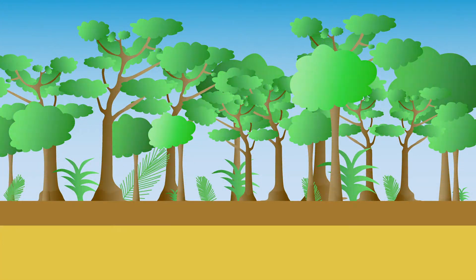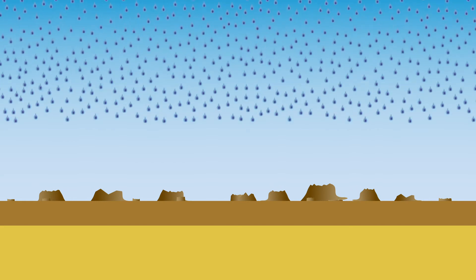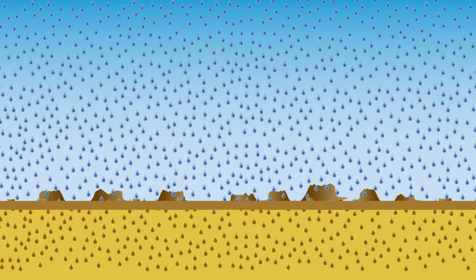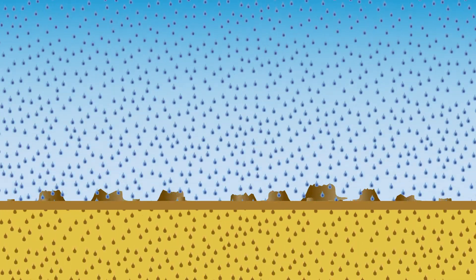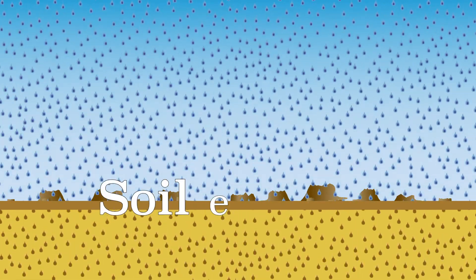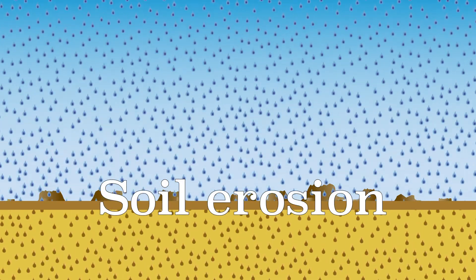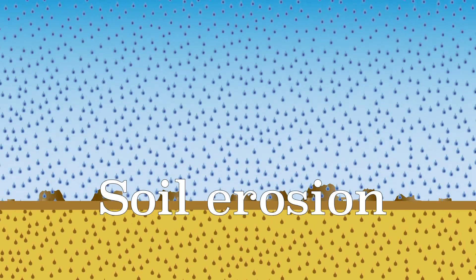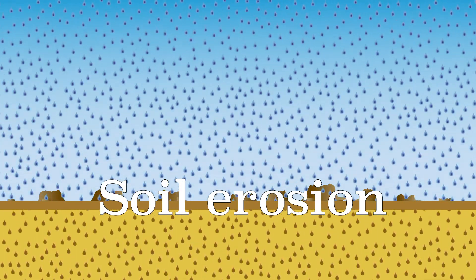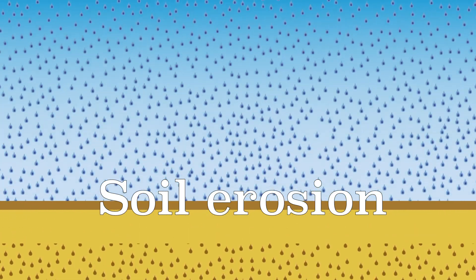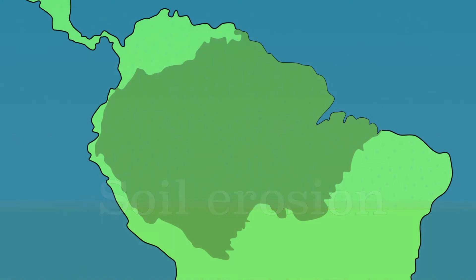After deforestation, the roots that can keep the soil together are gone. Due to the large amount of precipitation, the fertile soil quickly washes away. The flushing away of the top soil is called soil erosion. After washing away the fertile soil layer, it is difficult for the forest to recover. So, because there are different layers in the tropical rainforest, many plants and animals can live there.